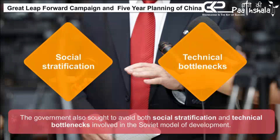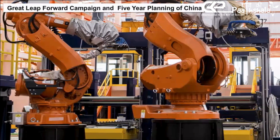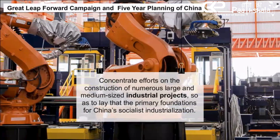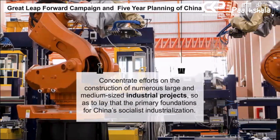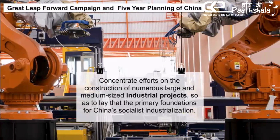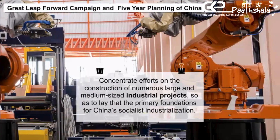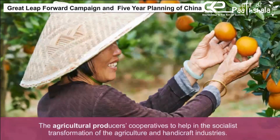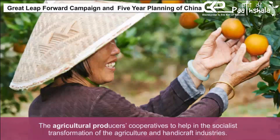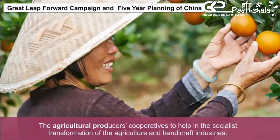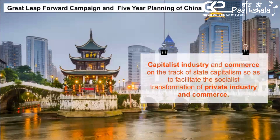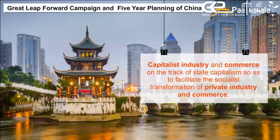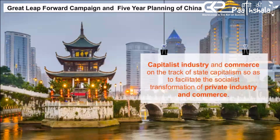The government sought political rather than technical solutions. The key tasks highlighted during five-year planning were to concentrate efforts on the construction of numerous large and medium-sized industrial projects, so as to lay the primary foundations of China's socialist industrialization. It aimed to develop agricultural producers' cooperatives to help in the socialist transformation of agriculture and handicraft industries, and to put capitalist industry and commerce on the track of state capitalism to facilitate the socialist transformation of private industry and commerce.